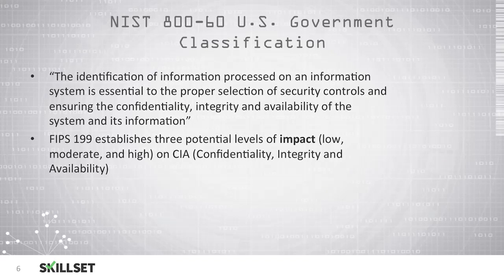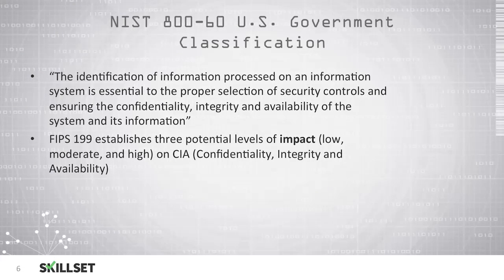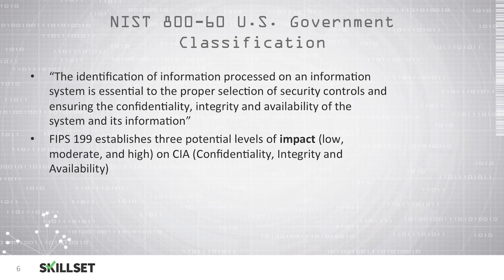NIST provides Special Publication 800-60, which describes government classification. In this document, they state that the identification of information processed on an information system is essential to the proper selection of security controls and ensuring confidentiality, integrity, and availability of the system and its information. The FIPS, or Federal Information Processing Standard 199, establishes three potential layers of impact: low impact, moderate impact, and high impact on your CIA. The impact is low if the loss would have a limited adverse effect on your organization, moderate if the loss would have a serious adverse effect, and high if the loss would have a severe or catastrophic adverse effect on your organization.